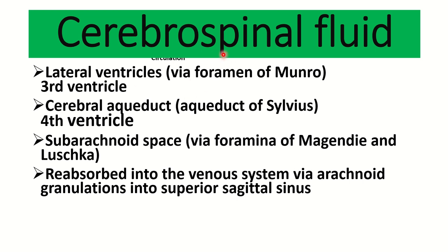Regarding CSF circulation: from the two lateral ventricles, it enters the third ventricle via the foramen of Monro. From the third ventricle it enters the fourth ventricle via the aqueduct of Sylvius. From there it enters the subarachnoid space through openings known as the foramen of Magendie and the foramina of Luschka, and finally is reabsorbed into the venous system via the arachnoid granulations into the superior sagittal sinus.